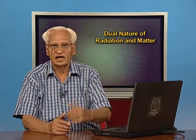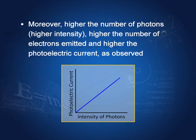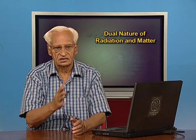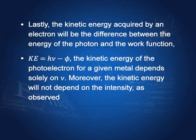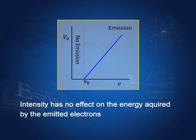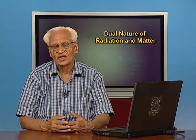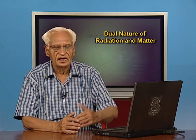Einstein said: in photoelectric emission, electromagnetic waves behave like particles, each photon carrying energy hν. The kinetic energy acquired by an electron is the difference between the photon energy and the work function: KE = hν − φ. As long as ν > ν₀, photoelectrons are emitted; if ν < ν₀, they are not. The emission is immediate, and kinetic energy is hν − φ. All aspects of the photoelectric effect are explained by this single hypothesis.